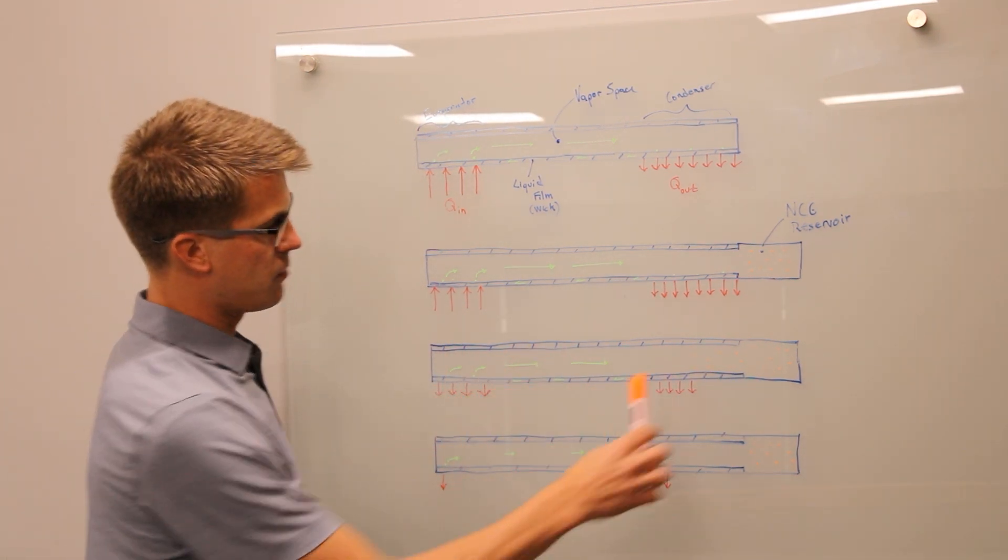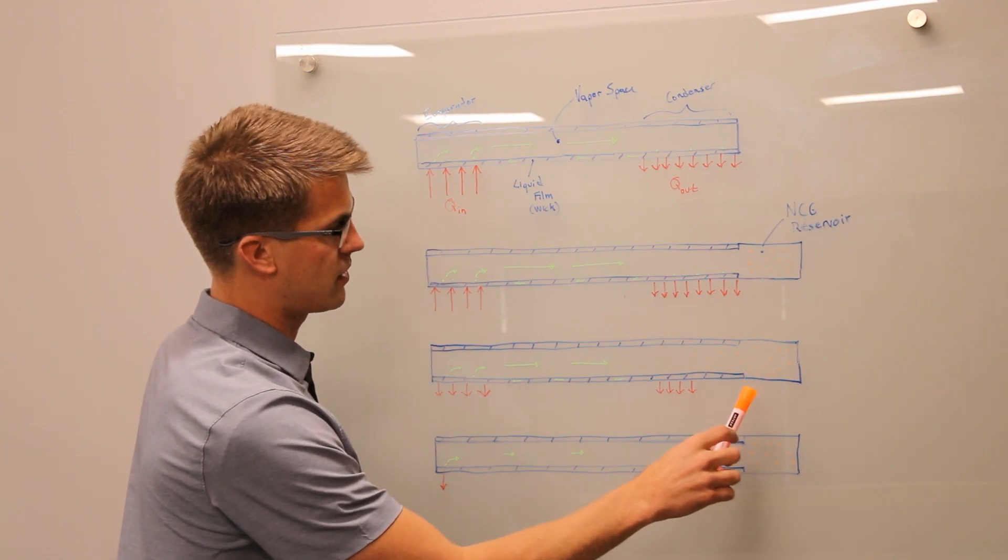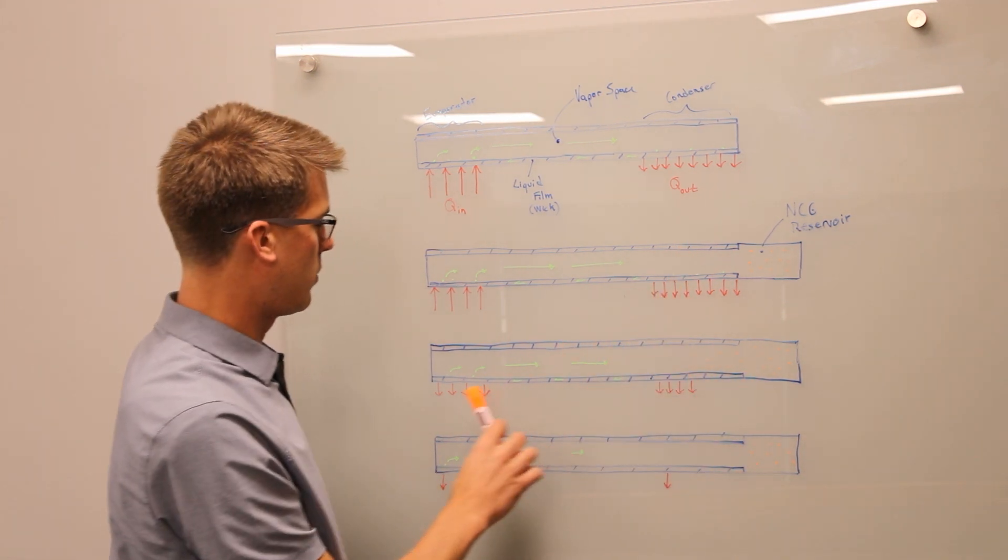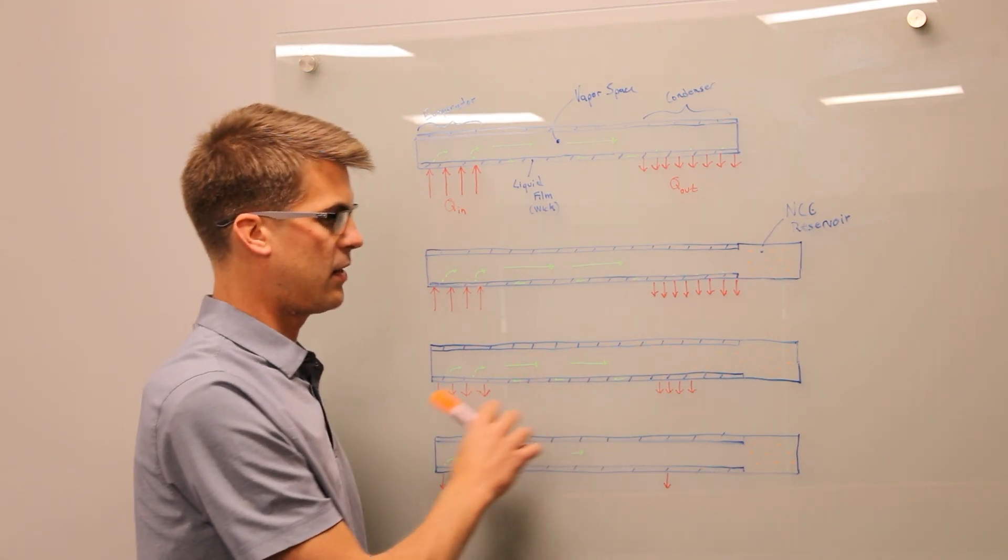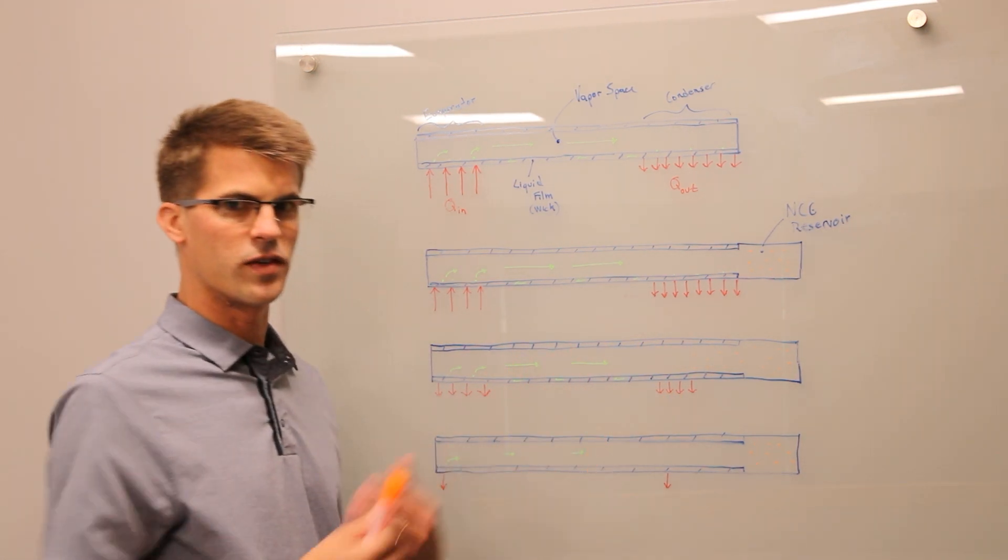When this occurs, you are actually blocking some of the condenser of the pipe which means you are reducing the amount of power that you are allowed to dissipate. Therefore, reducing the amount of heat leak and reducing the amount of heat you are actually removing from the component.